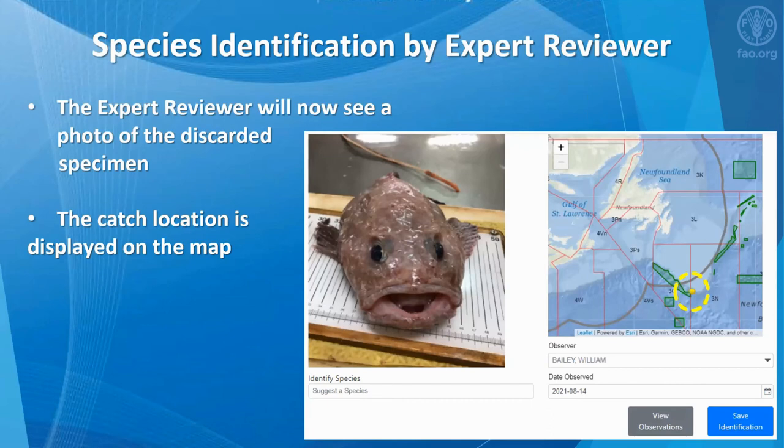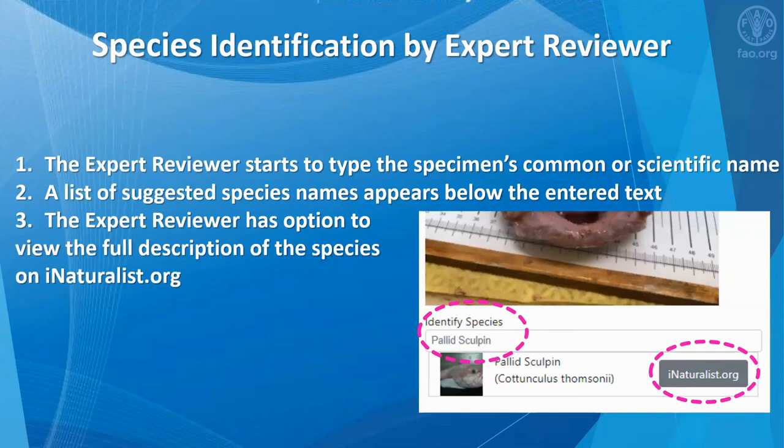The expert reviewer will now see a photo of the discarded species. The catch location is displayed on the map. When the expert reviewer starts to type the specimen's common or scientific name, a list of suggested species names appears below the entered text. The expert reviewer has the option to view the full description of the species on the iNaturalist.org website.